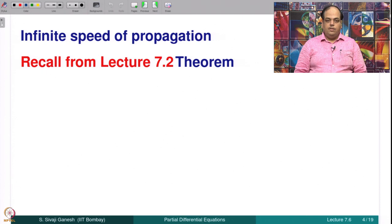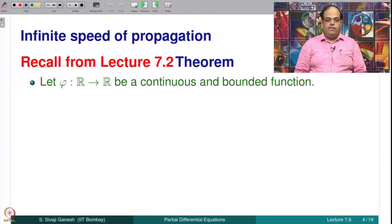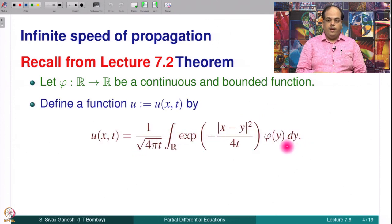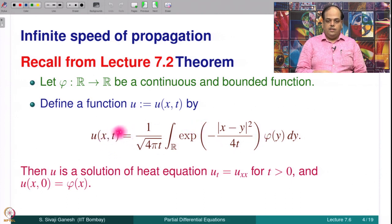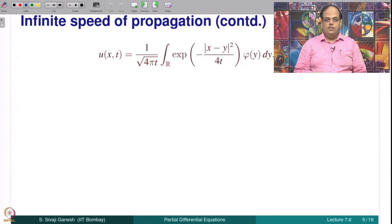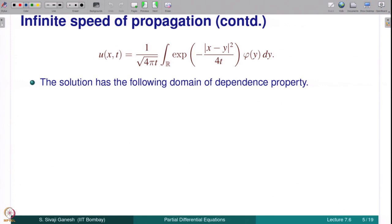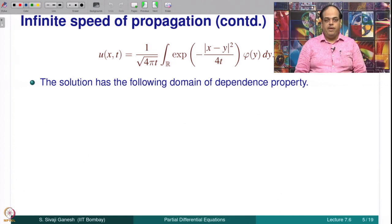Recall from lecture 7.2 where we established this theorem: whenever phi is a continuous and bounded function, if you define u(x,t) by this formula, then u is a solution to the heat equation u_t = u_xx for t positive, and satisfies the initial condition u(x,0) = phi(x). In other words, this formula represents a solution to the Cauchy problem for the homogeneous heat equation. The solution has a domain of dependence property — just as we discussed domain of dependence for the wave equation, we are going to discuss the same for the heat equation.